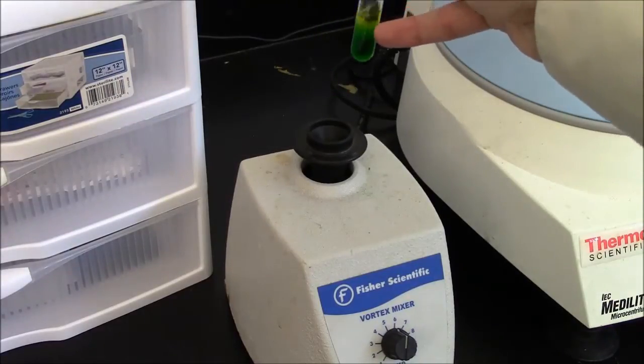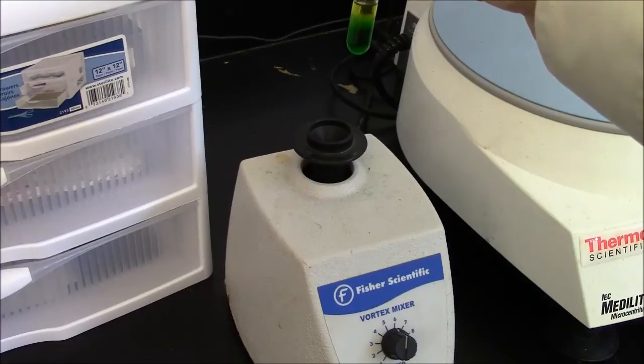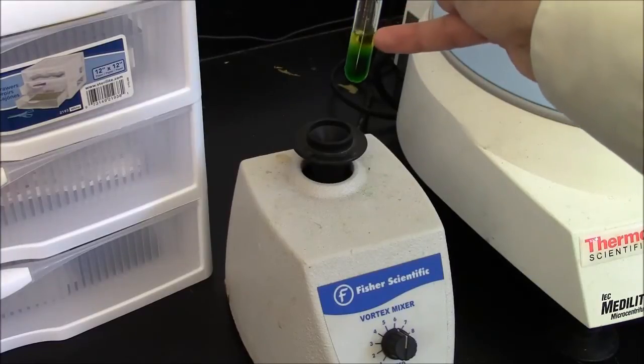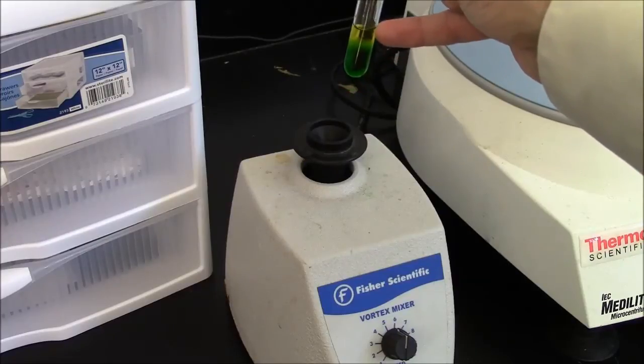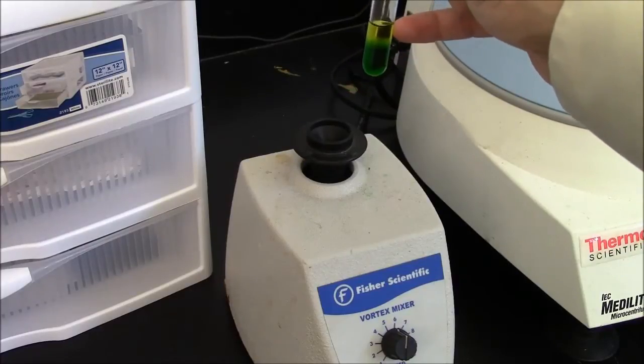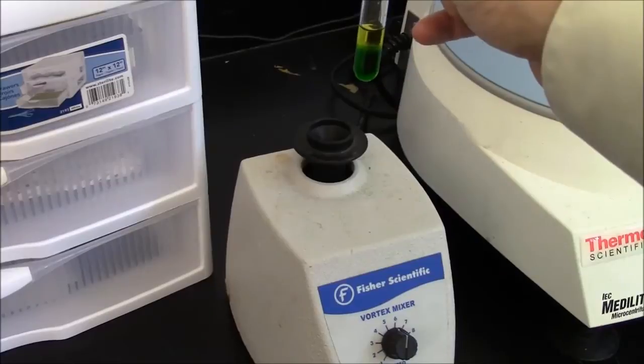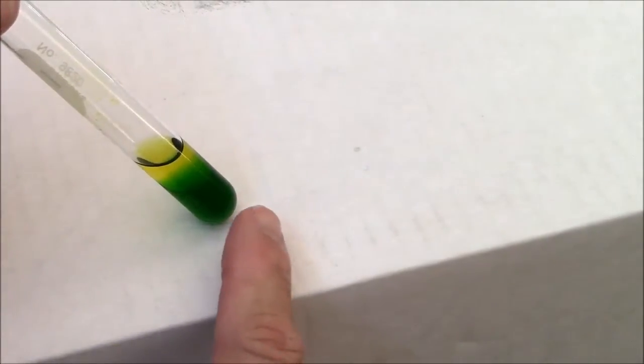So now I'm letting my layers separate. You can see a little bit of color is being extracted into the organic layer. Most of the color is remaining in the aqueous layer. Here's a close-up of what I've got. More of a yellow color in the organic layer, and the dark green is remaining in the aqueous layer.